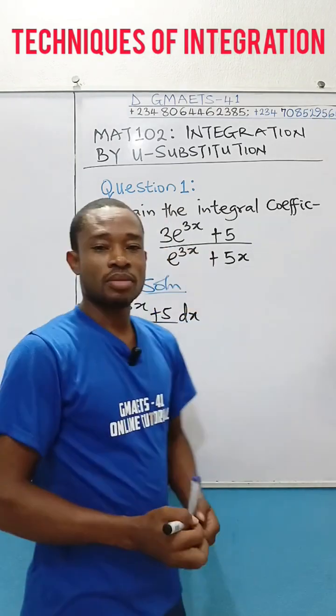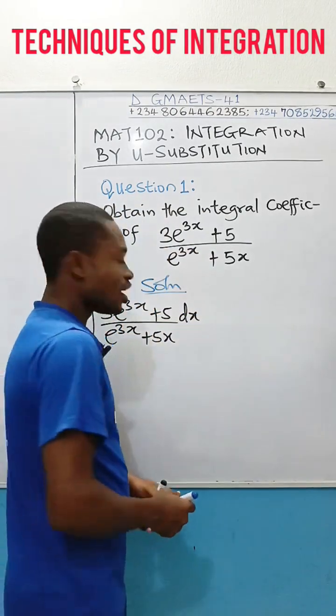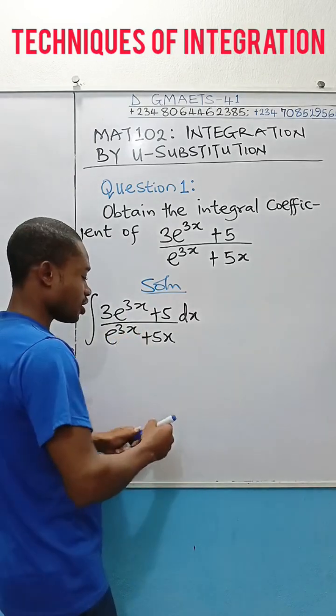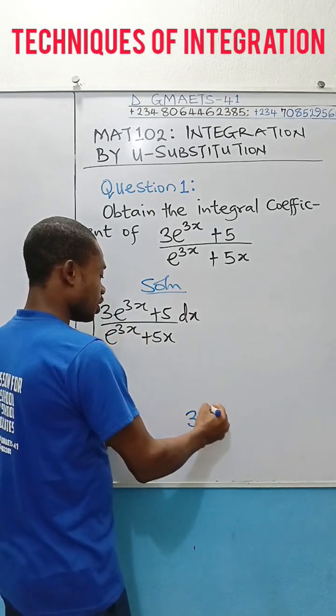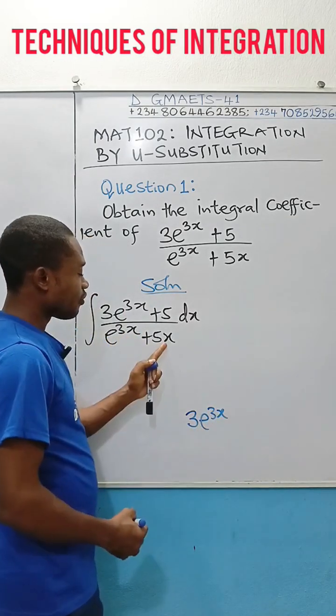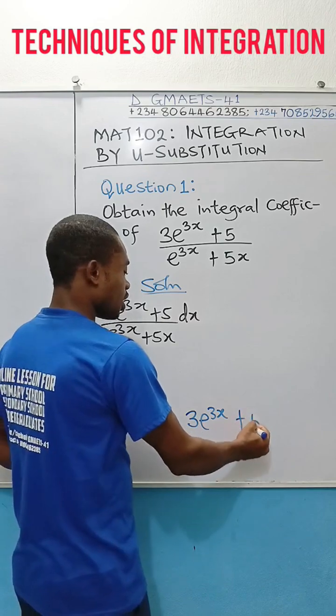So, differentiate the denominator and see if it will give you the numerator. If you differentiate exponential 3x, you're going to get 3 exponential 3x. If you differentiate this 5x, you're going to get 5.